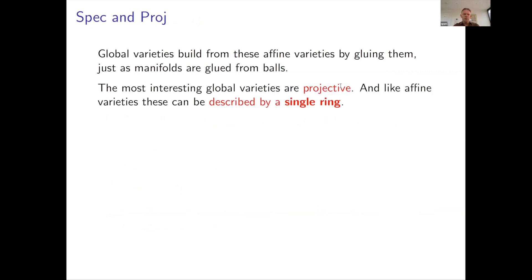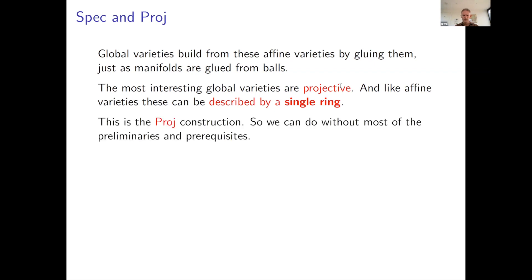But I'm going to do something simpler, which is consider projective varieties. Projective varieties can be defined by gluing affine varieties, but that's not what I'm going to discuss. They can also be described, just like affine varieties, by a single ring. And so that's the description I'll give you. It makes the subject much easier because we remove gluing, and we do everything in one go, so there's always essentially one chart.